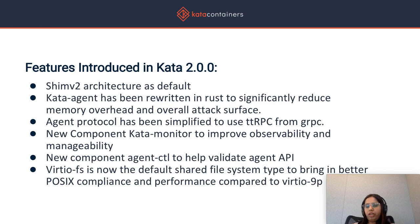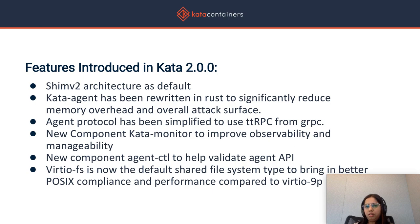Another developer tool called Agent Ctl was added, which helped us to validate the agent API as we continue to make improvements to it. VirtioFS is a shared file system that Red Hat came up with. In 2.0, we made the decision to make this the default and deprecated the VirtIO 9P protocol, which was no longer being maintained. With the shift to VirtioFS, we saw better POSIX compliance and also better performance in general.